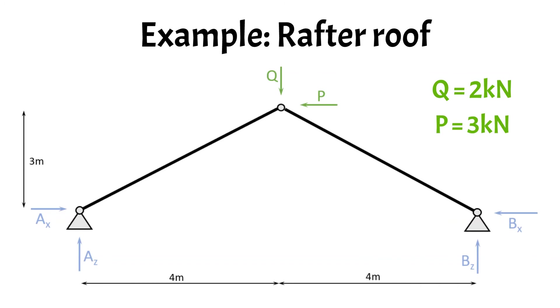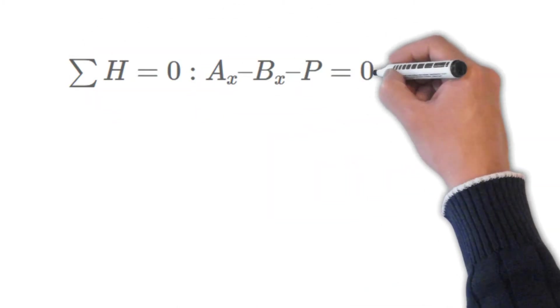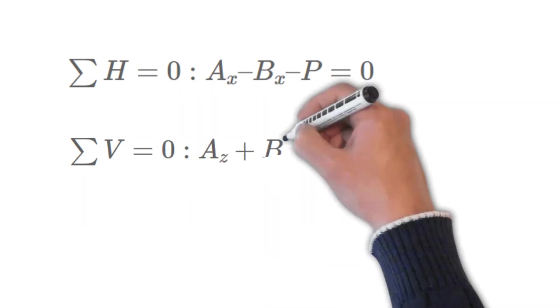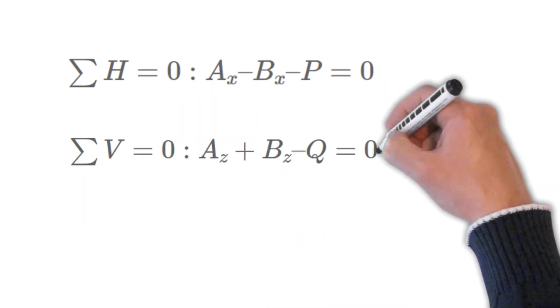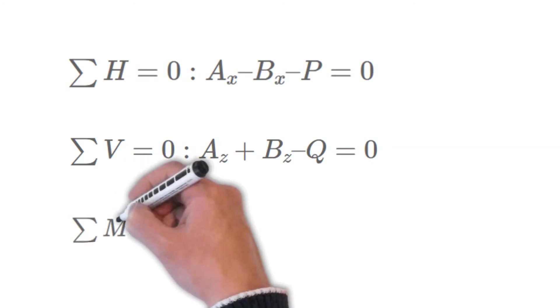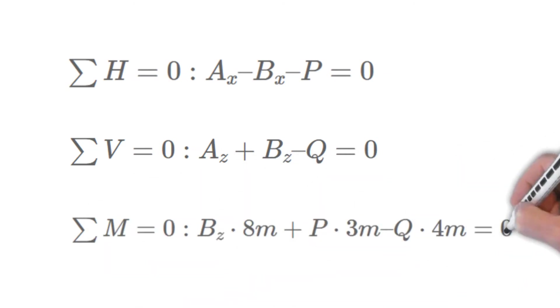Let's start by defining the equilibrium equations. The horizontal equilibrium is written as sum of all horizontal forces equals zero: Ax minus Bx minus P equals zero. We define the vertical equilibrium as sum of all vertical forces equals zero: Az plus Bz minus Q equals zero. And the moment equilibrium in point A as sum of all moments equals zero: Bz times 8 meters plus P times 3 meters minus Q times 4 meters equals zero.